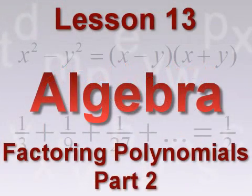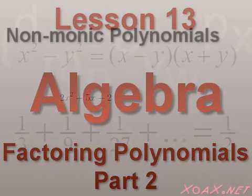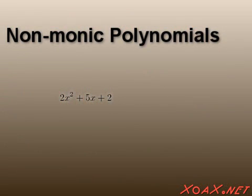Some polynomials cannot be made monic without introducing fractional coefficients, which we do not want. For example, in the polynomial 2x squared plus 5x plus 2, we cannot factor out the 2. However, as we will see, this polynomial can be factored without resorting to fractions.